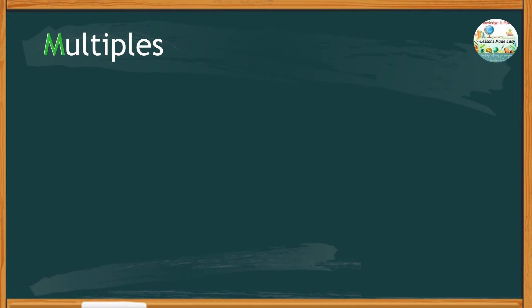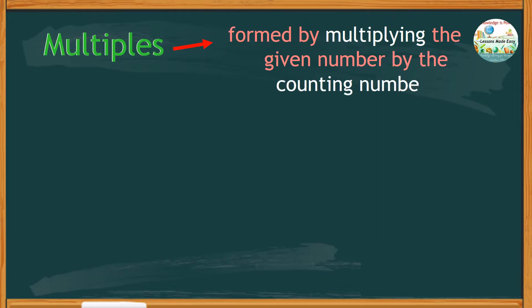This time let's talk about multiples. How are multiples formed? Multiples are formed by multiplying the given number by the counting numbers.